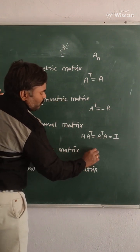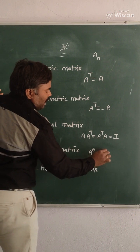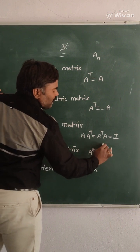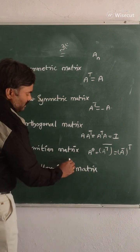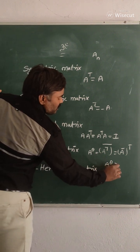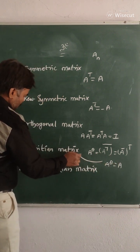Hermitian means you have to know A power theta. What is A power theta? It means transpose of the conjugate or conjugate of the transpose, all are same. In this case, if A power theta is equal to A, then you can say it is a Hermitian matrix.